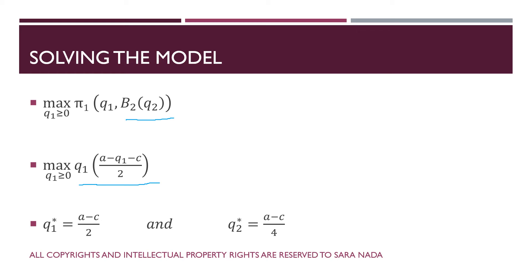When we solve for Q1*, then to get Q2* we substitute the optimal value of Q1* into firm 2's best response function Q2(Q1). Completing all these steps gives Q1* = (A − c) / 2 and Q2* = (A − c) / 4.